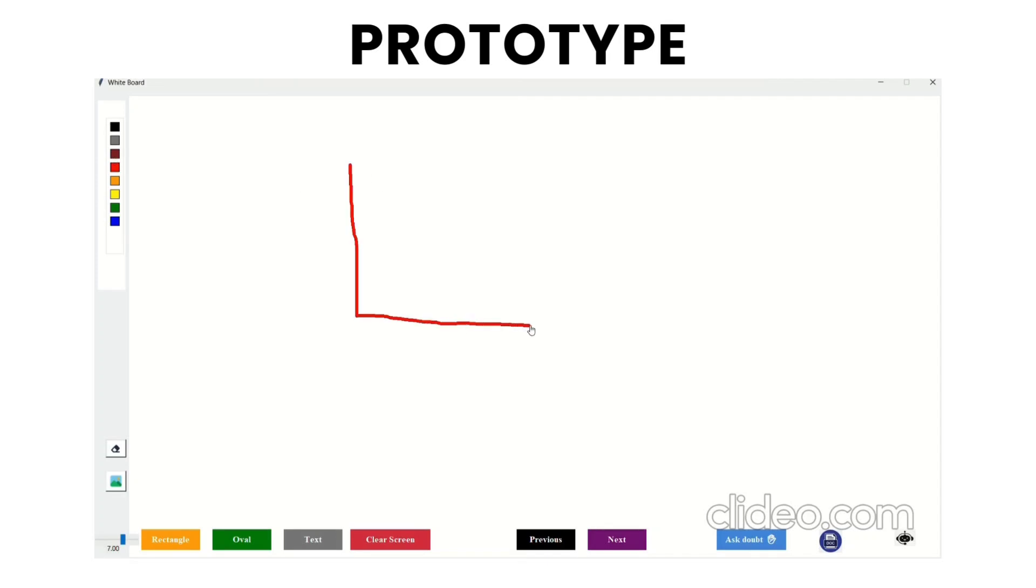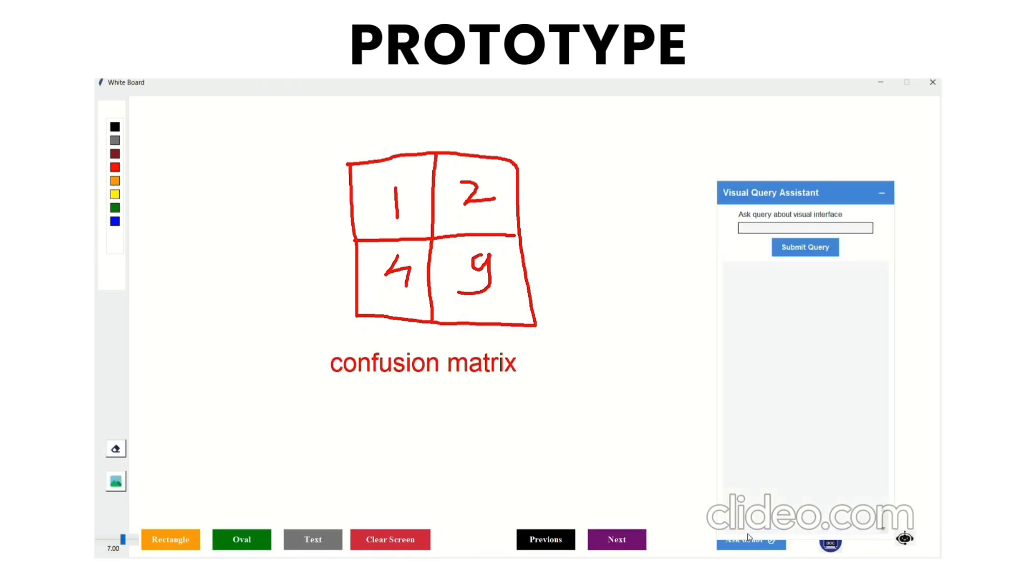So here is a quick look at our prototype. As you can see, ThinkBoard allows traditional drawing and document interactions, but with a powerful twist: AI-driven features.